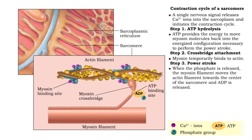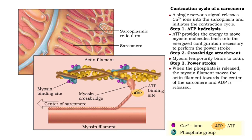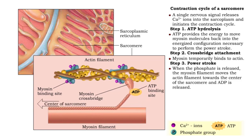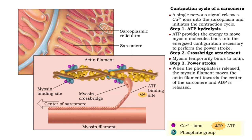Third, the release of the phosphate molecule triggers the power stroke. The myosin filament rotates, releasing the ATP. The force of the rotation slides the actin filament toward the center of the sarcomere.